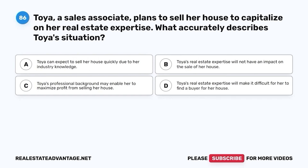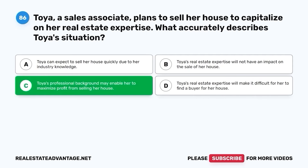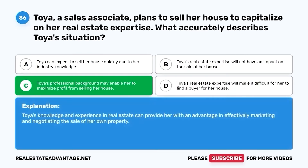Question 86. Toya, a sales associate, plans to sell her house to capitalize on her real estate expertise. What accurately describes Toya's situation? A. Toya can expect to sell her house quickly due to her industry knowledge. B. Toya's real estate expertise will not have an impact on the sale of her house. C. Toya's professional background may enable her to maximize profit from selling her house. D. Toya's real estate expertise will make it difficult for her to find a buyer. The correct answer is C. Toya's professional background may enable her to maximize a profit from selling her house. Toya's knowledge and experience in real estate can provide her with an advantage in effectively marketing and negotiating the sale of her own property.